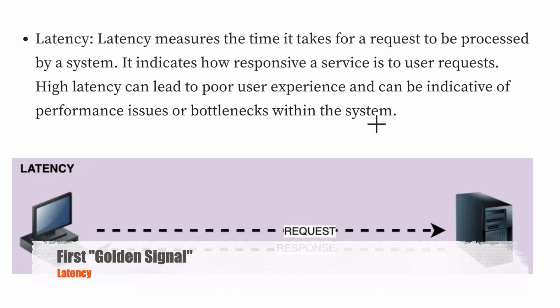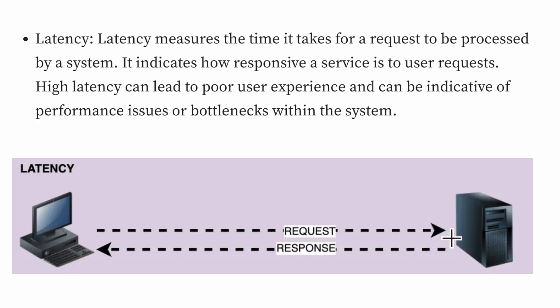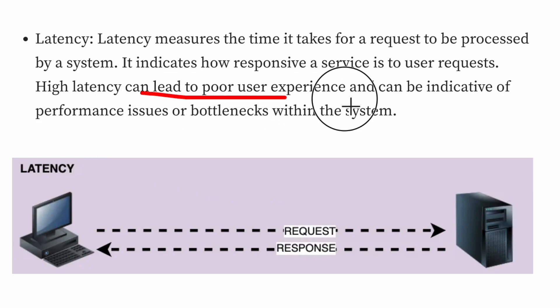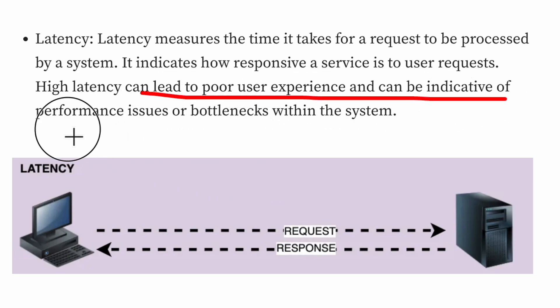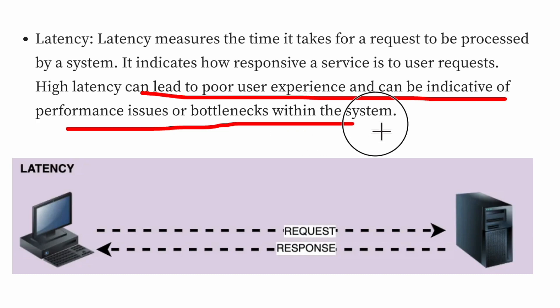Latency is how much time it takes for a request to be processed. You send a request, you get a response, and it takes two seconds. Ideally, an API response should be in milliseconds — probably 200 or 300 milliseconds. If it takes seconds to respond, the system is very slow and the usability of the application is not good. High latency can lead to poor user experience and can be indicative of performance issues or bottlenecks within the system.